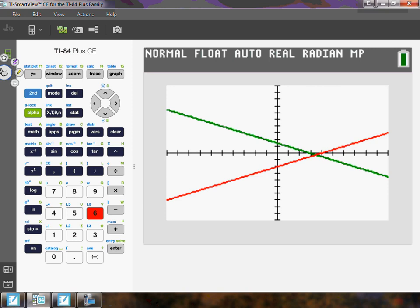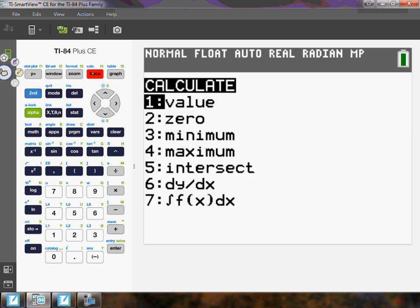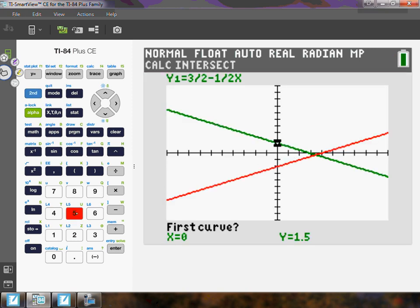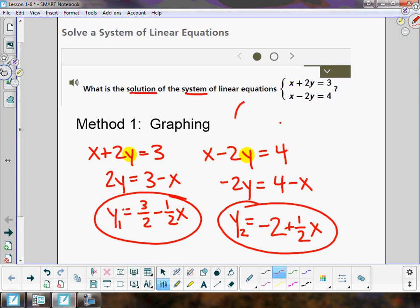Let's find their intersection using second, trace, intersect, enter three times. We get the intersection 3.5, negative 0.25. They intersect at 3.5, -0.25. Let's remember this solution.